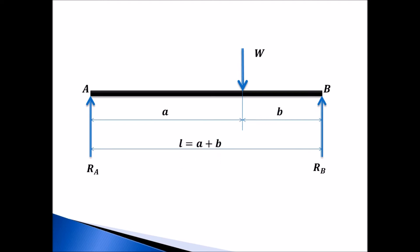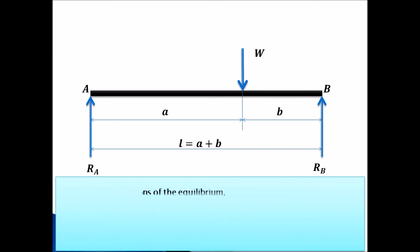Similarly from the right hand support this distance is supposed to be b. So total span length from this point to this point is equal to a plus b. I will apply the conditions of equilibrium. The first condition of equilibrium is summation of forces in y direction is equal to zero. The forces which are acting in the upward directions they are positive and the forces which are acting in the downward directions they are negative.